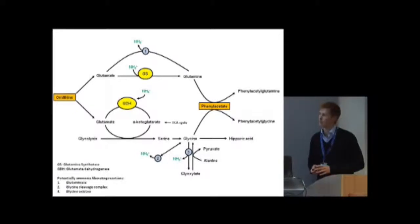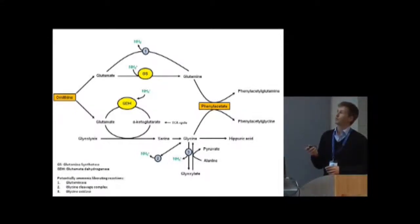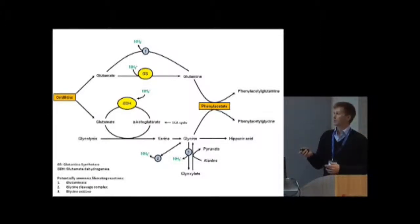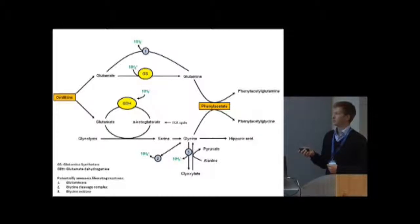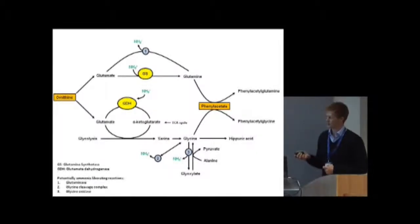Looking at the mechanism once again: ornithine increases the provision of glutamate. Glutamate can be used as a substrate for glutamine synthesis, thereby removing ammonia in the glutamine synthetase step. However, we believe that glutamine is also important in the production of glycine via serine, and that the glutamate dehydrogenase reaction is a potential route for ammonia removal in this model. Glutamine and glycine can both conjugate with phenylacetate, producing phenylacetylglutamine and phenylacetylglycine. In this model, phenylacetylglycine appears to be a far more important conjugation product found in urine, providing a mechanistic explanation for ammonia removal in this model of acute liver failure.